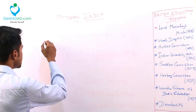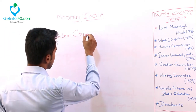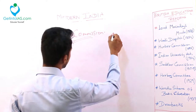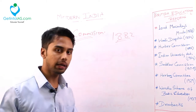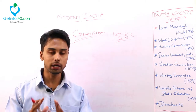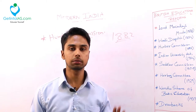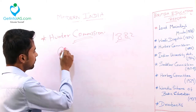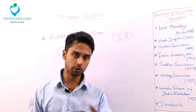Next came the Hunter Commission in the year 1882. The main aim of this Hunter Commission is to focus only on the primary and secondary education, not college levels. The primary mandate of this Hunter Commission is to focus on primary and secondary education. Hunter Commission stated that primary education should be reformed again.